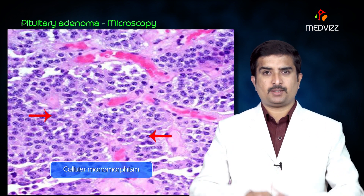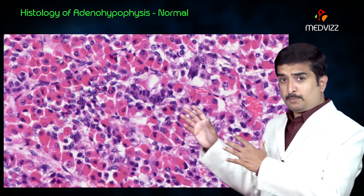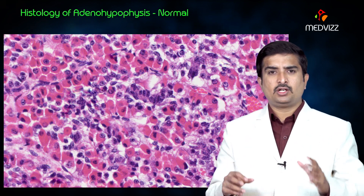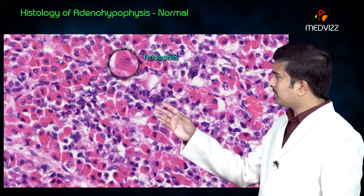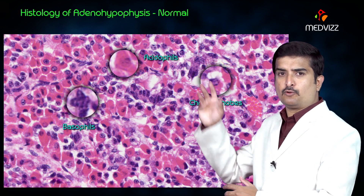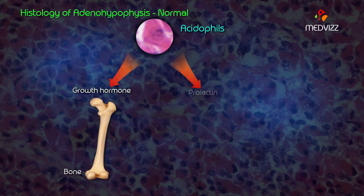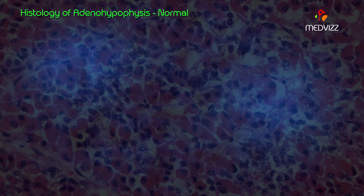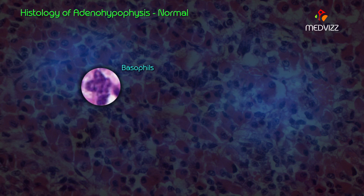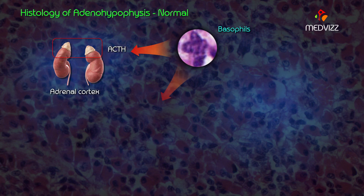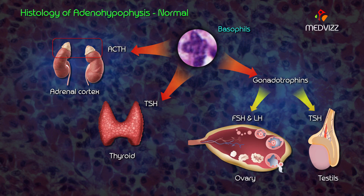In the normal pituitary, the adenohypophysis — that is, the anterior pituitary — contains three major cell types: acidophils, basophils, and chromophobes. The pink acidophils secrete growth hormone and prolactin. The dark purple basophils secrete corticotropin (ACTH), thyroid stimulating hormone (TSH), and the gonadotropins — follicle stimulating hormone and luteinizing hormone.